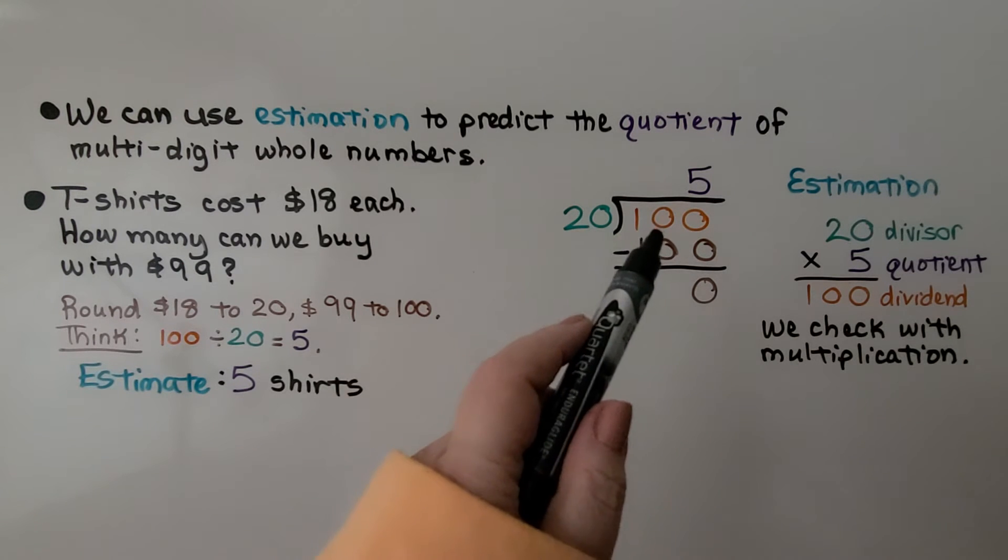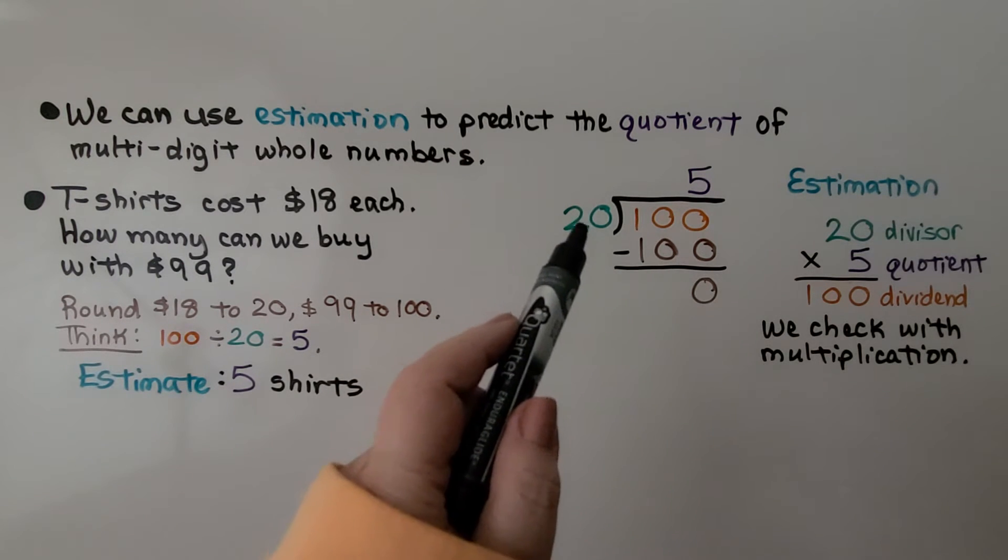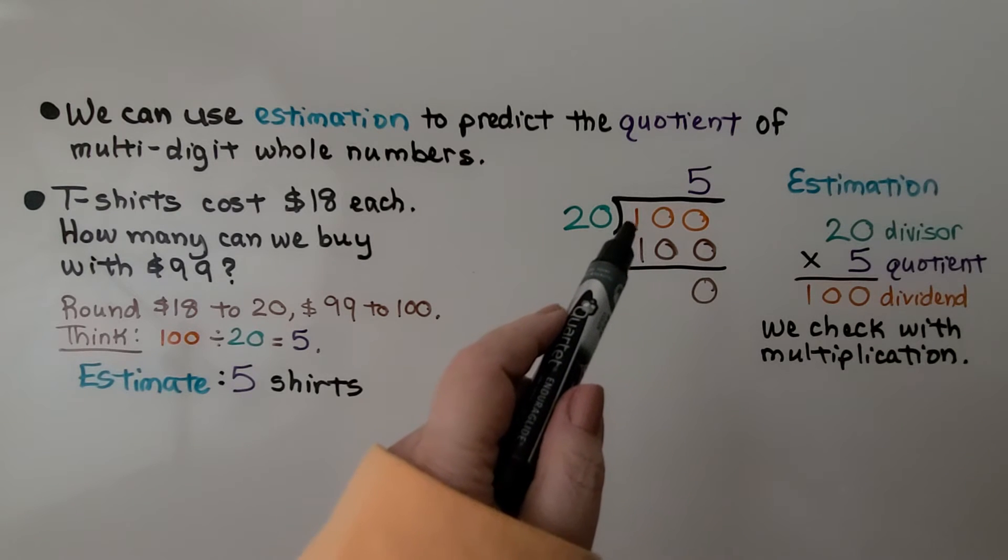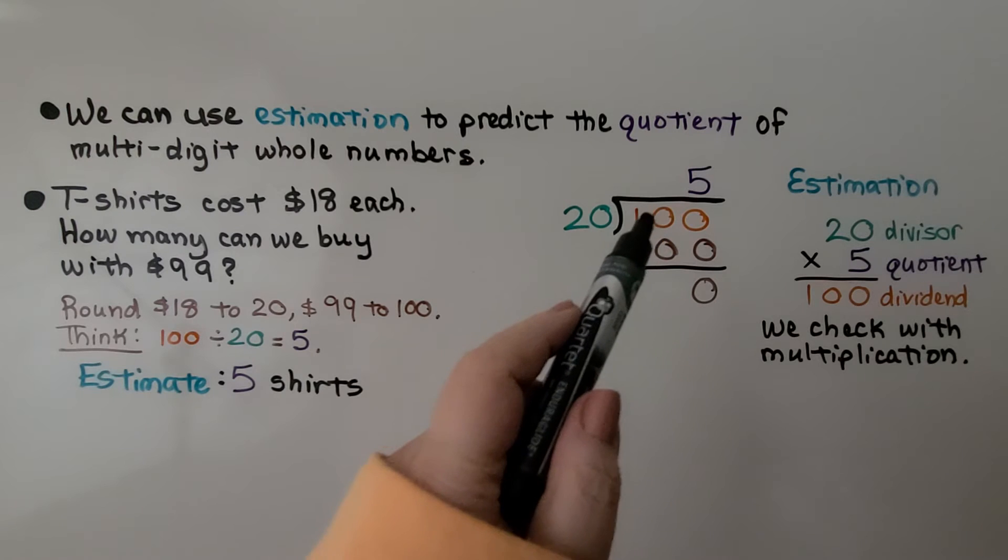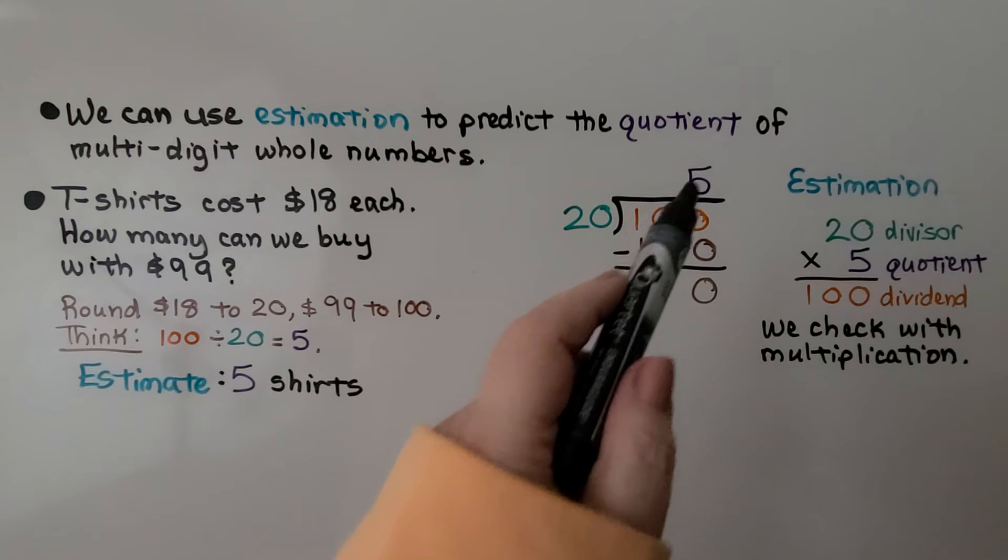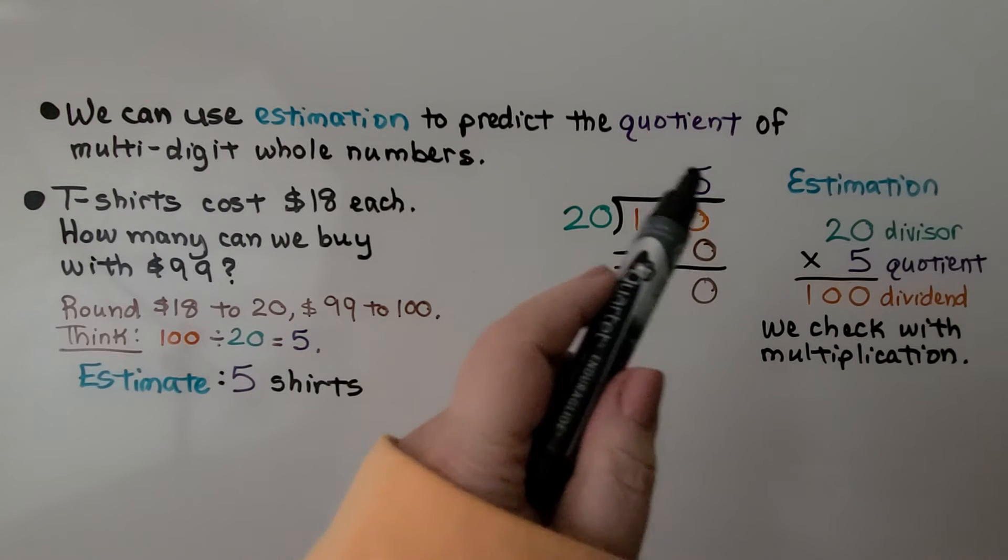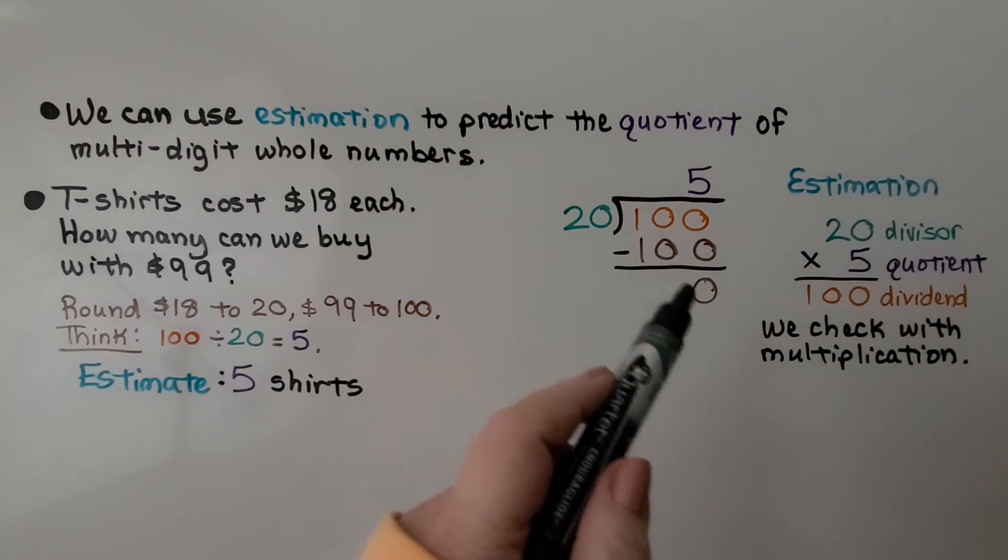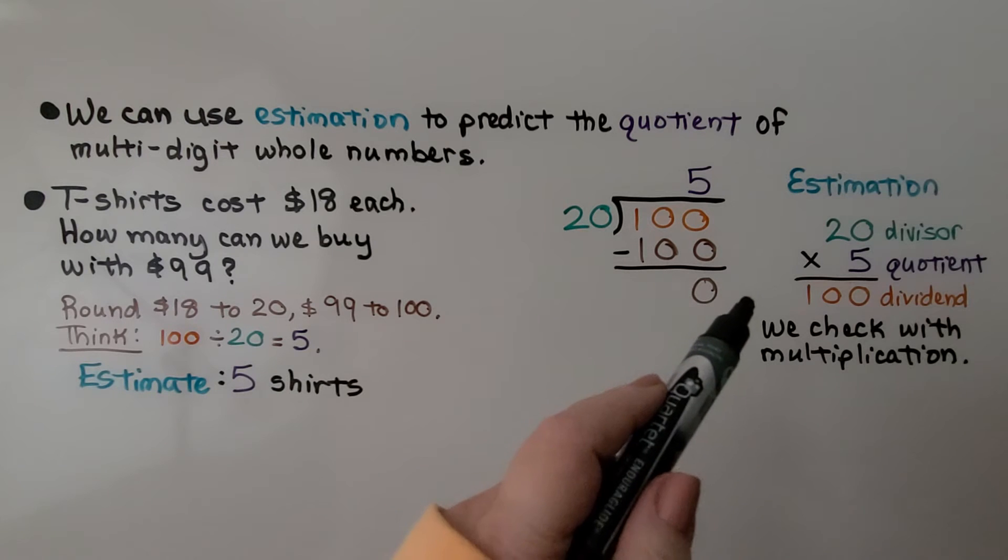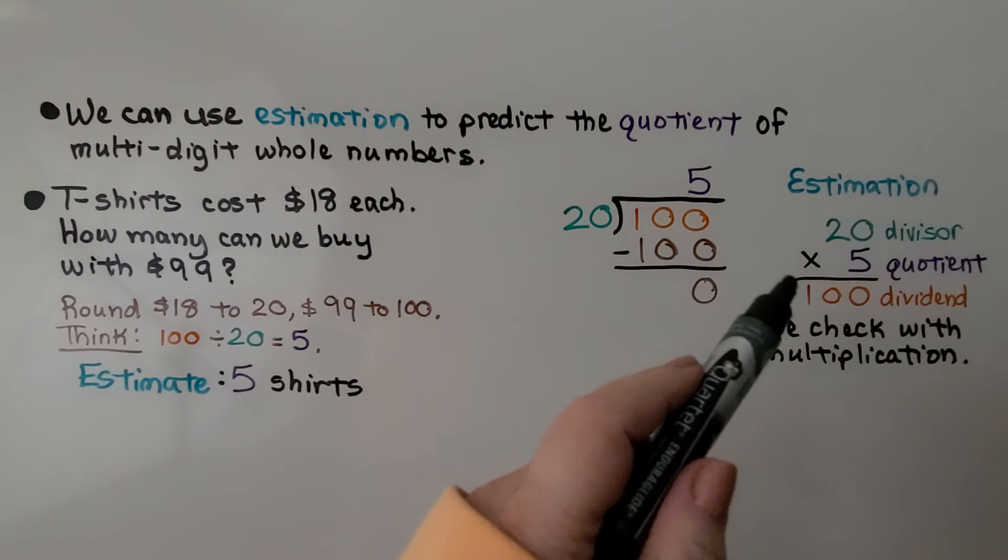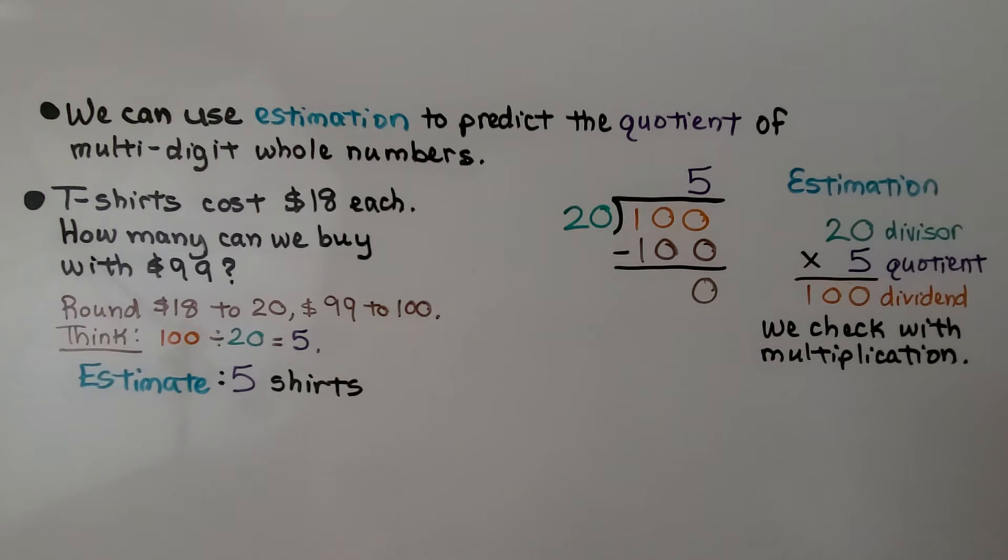We have 100 divided by 20. 20 can't fit into the 1. So we ask ourselves, can 20 fit into 10? No. Can 20 fit into 100? Yes. 5 times. And 20 times 5 is 100. We subtract and get a zero remainder. We can multiply to check. 20 times 5 is 100. We know we can get about 5 shirts as an estimate.